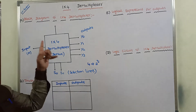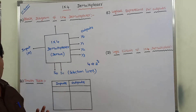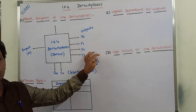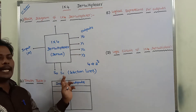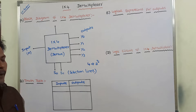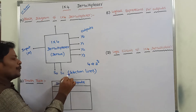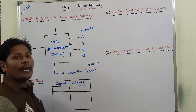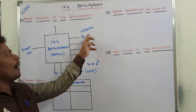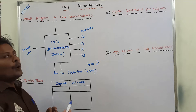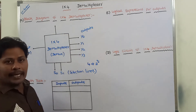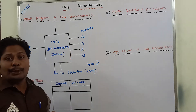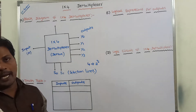1x4 demultiplexer contains 1 input, 4 outputs, and 2 selection lines. By using those 2 selection lines, we have to select only 1 output among the 4 outputs. Whatever output is selected, the input line is connected to that output line.